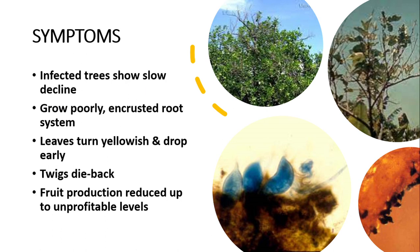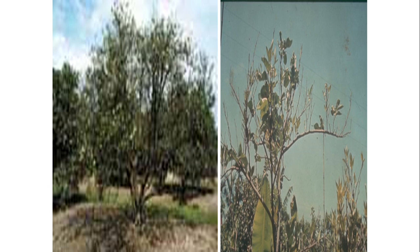What are the symptoms of slow decline of citrus? Infected trees show slow decline, grow poorly, and develop an encrusted root system. Leaves turn yellowish and drop early. Twigs dieback, and fruit production is reduced to unprofitable levels. Here you can see some glimpses of these symptoms as well.